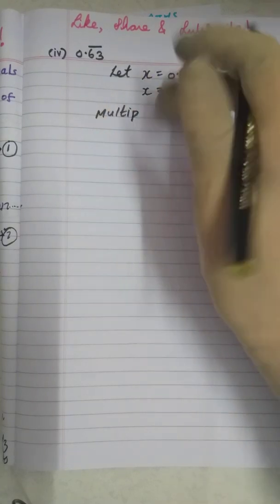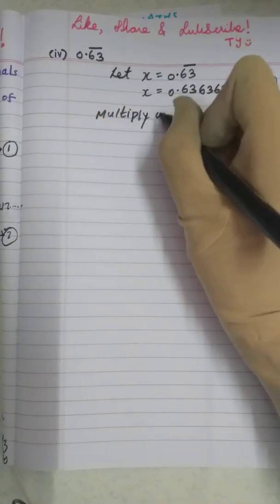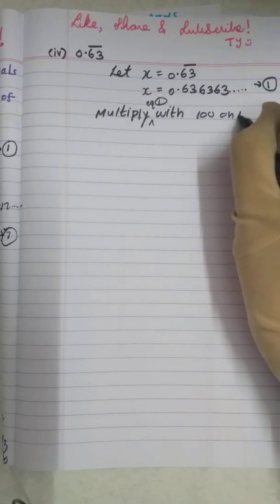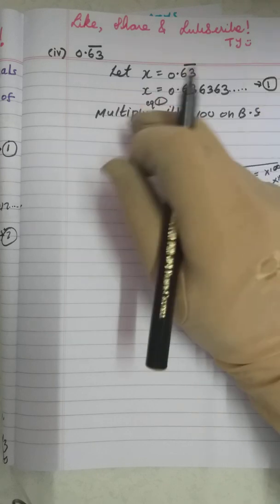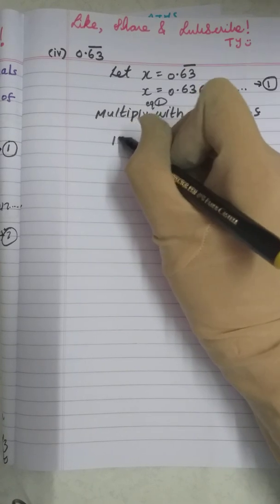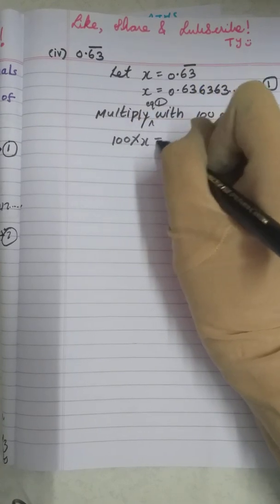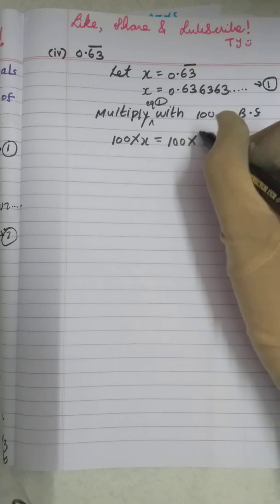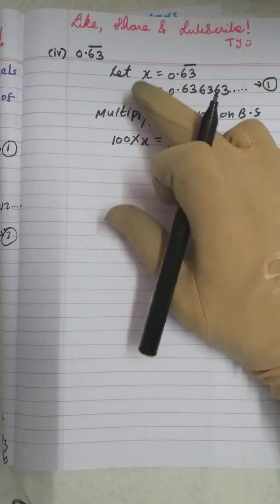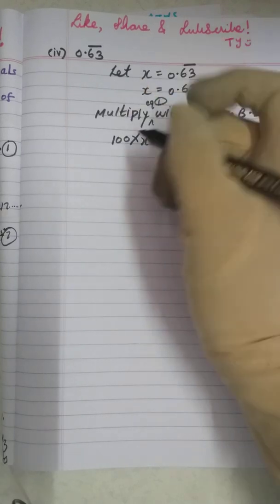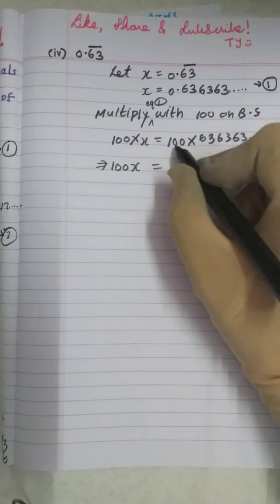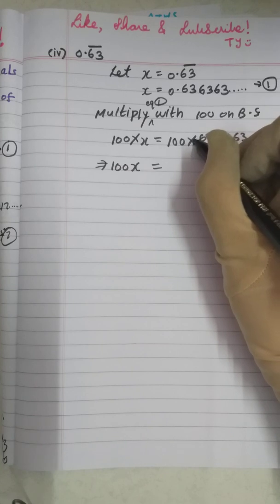So we are going to multiply the whole equation 1 with 100. So multiply equation 1 with 100 on both sides. Remember, whenever you multiply anything in an equation, you have to multiply on LHS as well as on RHS. So 100 × X equals 100 × 0.636363 and so on. We are multiplying this equation 1 with 100 on both sides.